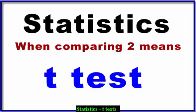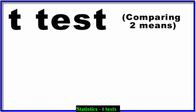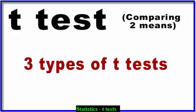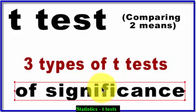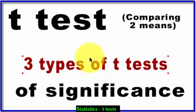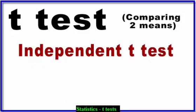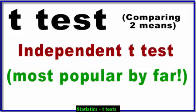T stands for two. Here is the overview for the t-tests — there's more than one. There are three types of t-tests, and the test is to see if there's a significant difference between the means. That's what we call a test of significance. The first test we're going to go over is the independent t-test. This one is the most popular by far.